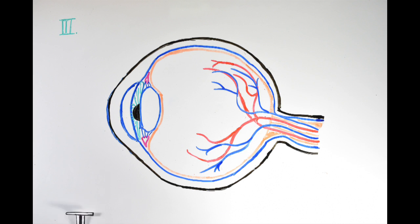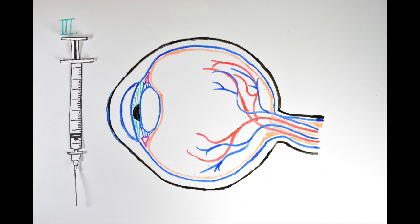Thirdly, drugs can be directly injected. This is the most common method for reaching the back of the eye today. But injections are highly invasive and can cause complications such as bleeding or structural damage, and they cannot be used repetitively over a short period of time.